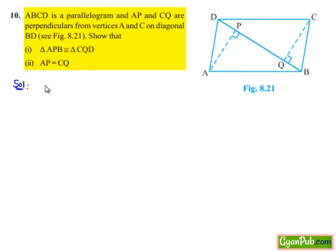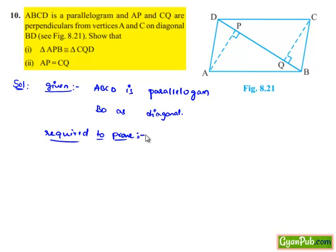let us note the given information that ABCD is a parallelogram with BD as diagonal, and we are required to prove that triangle APB is congruent to triangle CQD and AP is equal to CQ.